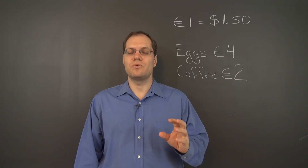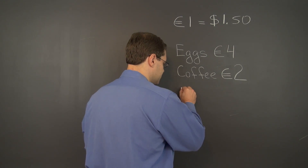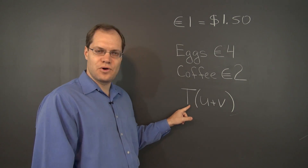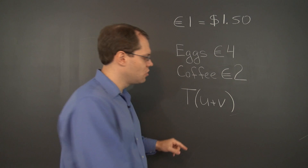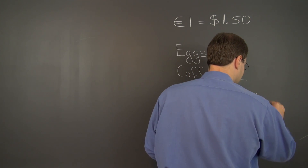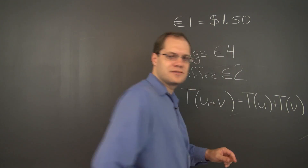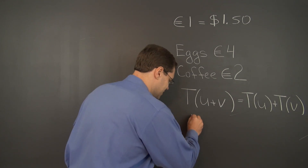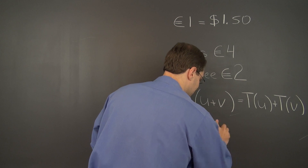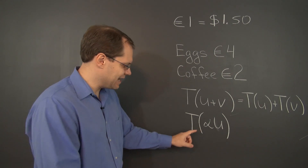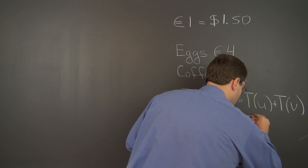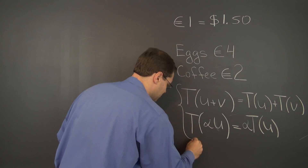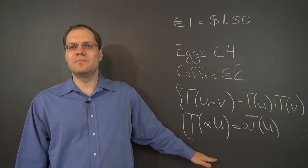So let's write down as an equation what we just realized in words. A transformation is linear if it doesn't matter whether you add first and then transform, or whether you transform the individual elements and then add the results. And the second property is that it doesn't matter whether you multiply — let's use U — whether you multiply by a scalar first and then transform, or whether you transform first and then multiply by the same scalar. So if your transformation or function or map has this property, then it will be considered linear.